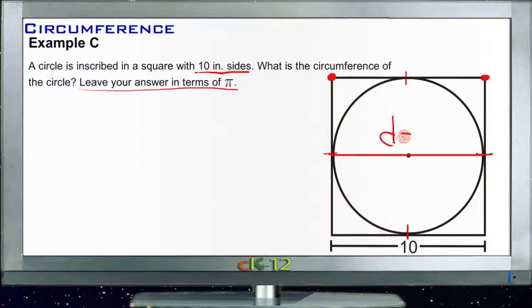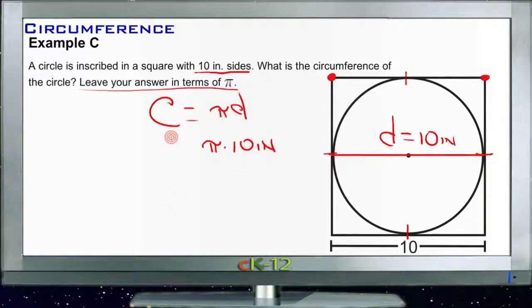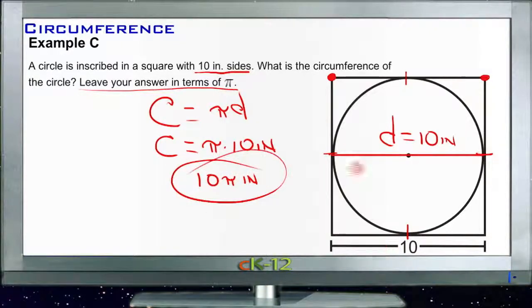And if the diameter of the circle is 10 inches, then finding the circumference is easy. We know that circumference is just pi times the diameter. So if the diameter is 10 inches, we have pi times 10 inches, or the circumference of the circle is 10 pi inches. And we're done.